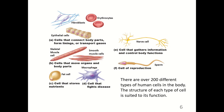There are over 200 different types of human cells in the body, and the structure of each type is suited to its function. Figure A shows cells that connect body parts, form linings, or transport gases. Fibroblasts secrete collagen, which connects and binds all body tissues together. Epithelial cells form linings and boundaries, such as your skin and the internal membranes of your GI tract. Erythrocytes, or red blood cells, transport gases like oxygen through your body.